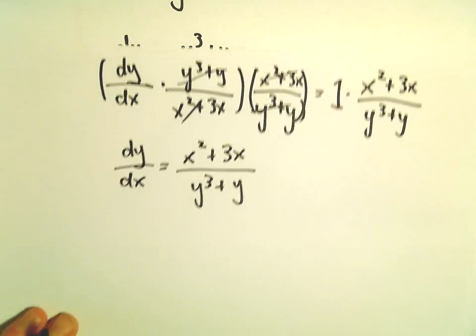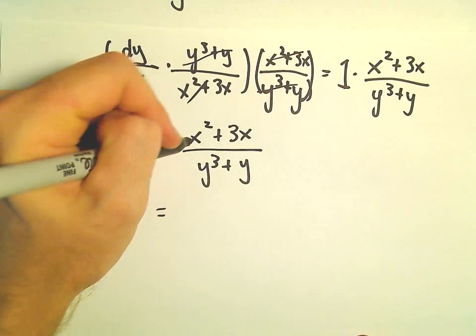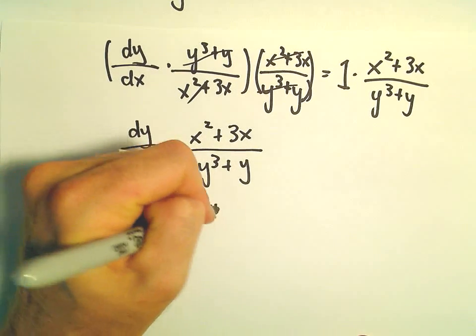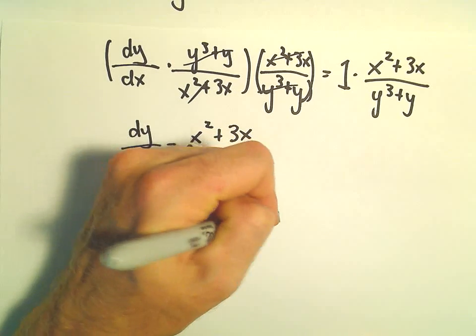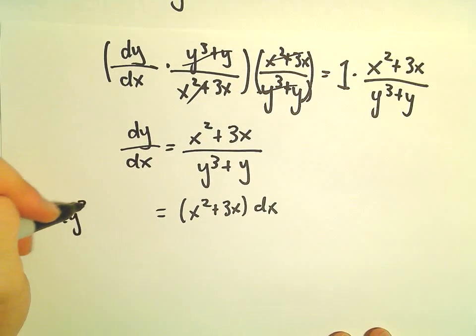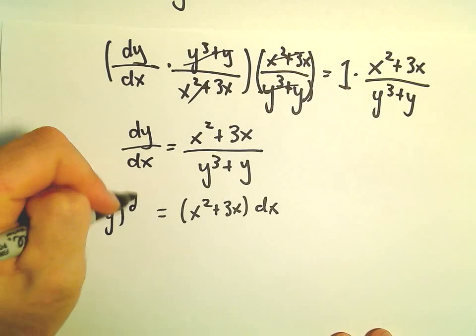But now I'm just going to cross multiply. So we would have x squared plus 3x times dx equals y cubed plus y times dy.